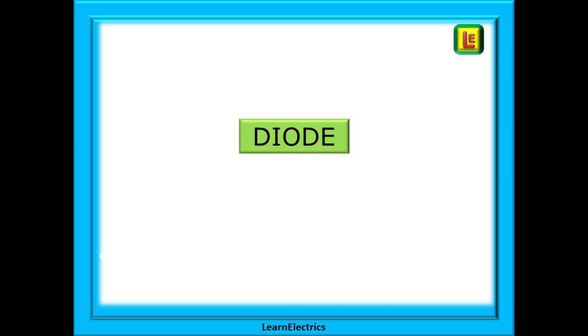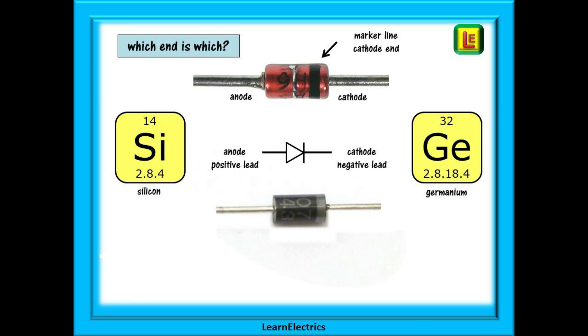If we look at the diode part next, a diode is made from a small sliver of silicon and this forms a PN junction, a one-way path for current to flow.